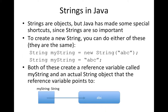Strings are used really, really commonly, really frequently in Java to pass information around. And because they're used so often, even though they're not primitive variables — they are a class and you create string objects — because they're used so often, Java has put in some shortcuts to make them easy to use.